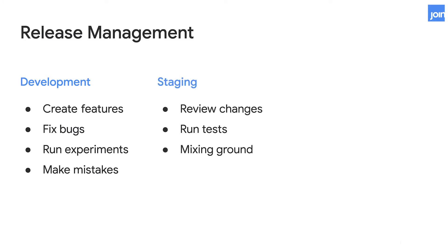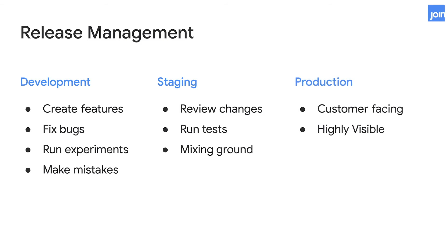Staging, also referred to as a test or QA environment, is where tests are run manually or through automation, and due to complexity can consume a lot of resources. This is used as a mixing ground to review changes. Production is where value is created for the customers and the business. This is a highly visible environment and should be as error free as possible.